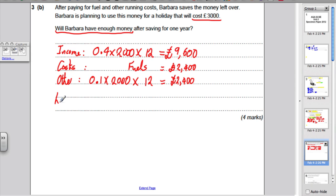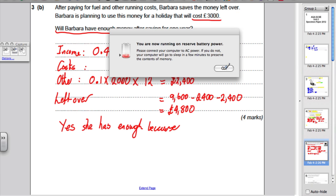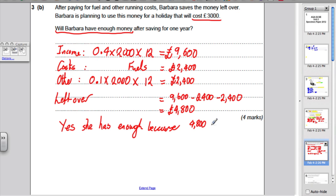So, her leftover money, therefore, must be equal to the 9,600, subtract the fuel costs and subtract the other costs. So, that's equal to 9,600, subtract 4,800. So, she's left with £4,800. But to answer the question, does she have enough money for a holiday of £3,000? And you say, yes, she has enough, because 4,800 is bigger than 3,000 pounds.